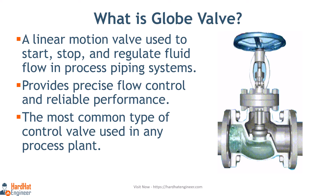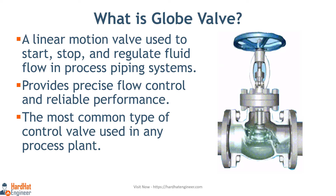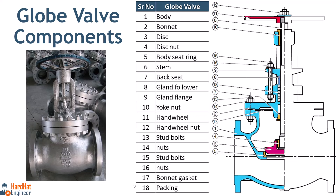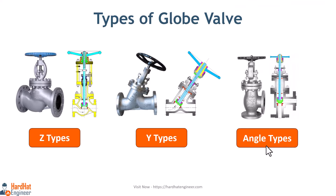This characteristic provides the globe valve good throttling ability required for regulating flow. Leakage from the globe valve seat is less compared to the gate valve, mainly due to right-angle contact between the disc and seat ring, which allows a tighter seal. In the valve cross section you can see the key components; the valve body shape is globular compared to a gate valve, which makes it easier to identify.